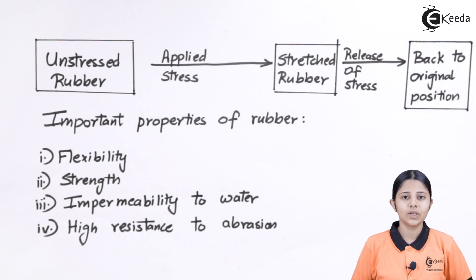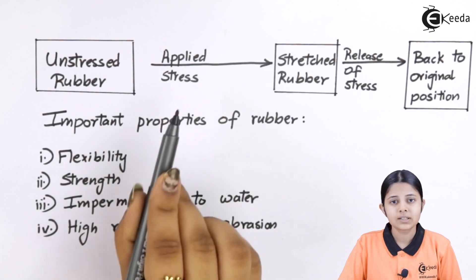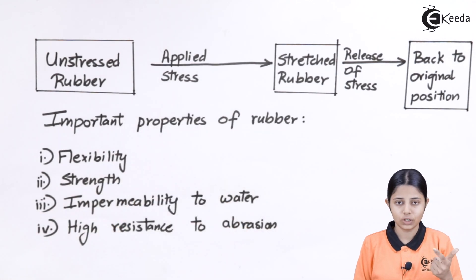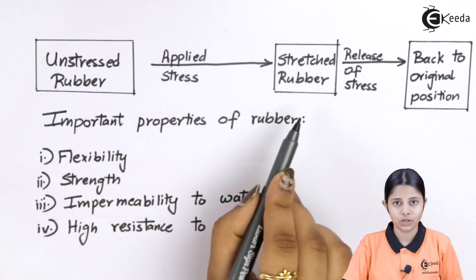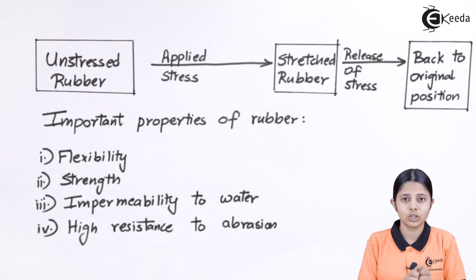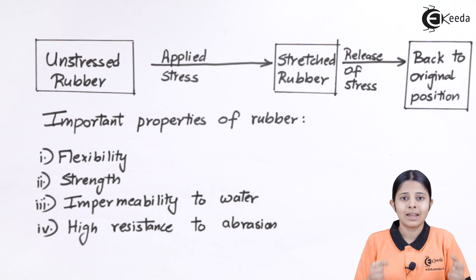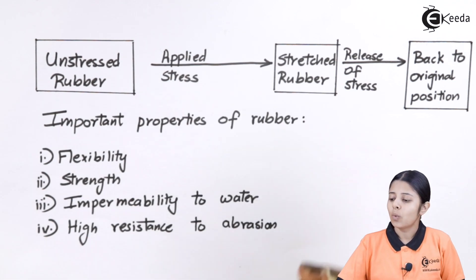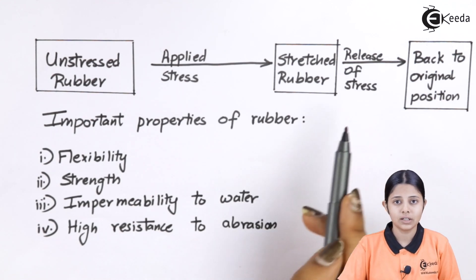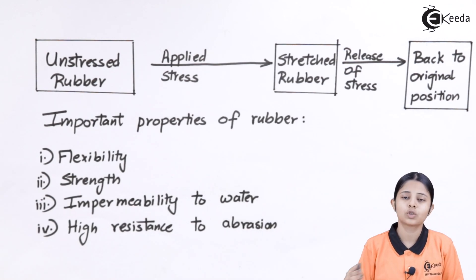Let us see the property of elasticity in the form of a diagram. We have unstressed rubber, and stress is being applied — either with the help of machines or human intervention. After applying stress, there is stretched rubber. The dimensions are changing and the rubber is under stress. Once stress is released, it comes back to its original position and regains its original dimensions — that is, original shape and size.